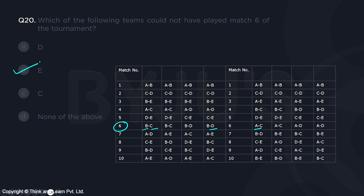Once question 16 is answered, question 20 is automatically answered. Question 16 asked which team definitely played match five — the answer was E. So E definitely played match five, which means E definitely did not play match six. That was the answer for question 20.